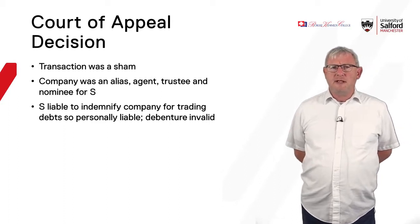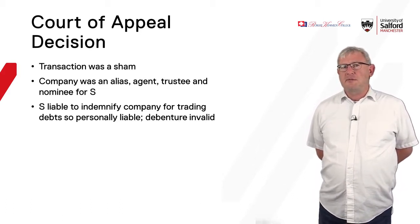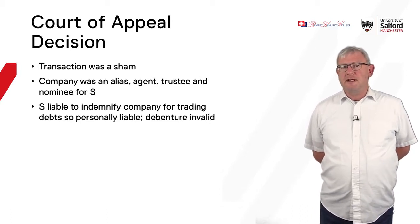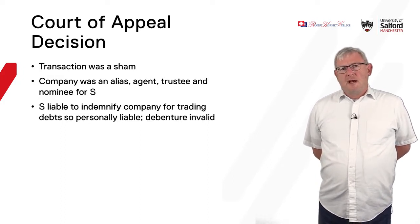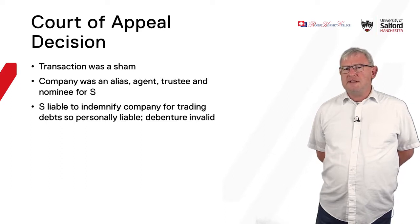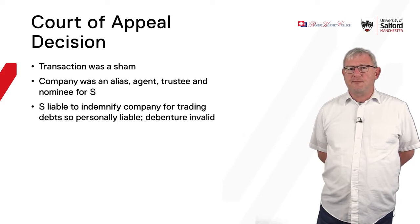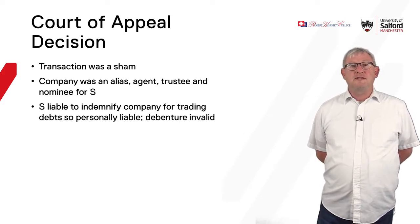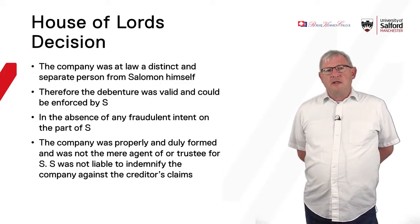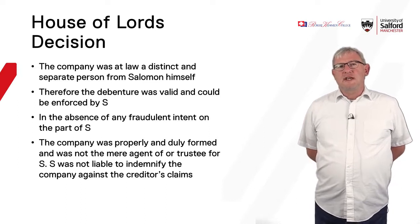The Court of Appeal said that even though this company had been properly registered and the law complied with in full, it was a sham — Mr Salomon should be treated as the same as the company, with no separate legal personality. This was in many ways the commonly held view at the time, because in the 1890s it was thought that the company structure should only be used for large trading operations, not for small businesses like that of Mr Salomon. So the Court of Appeal upheld the status quo, in line with previous authority. However, the House of Lords disagreed — and this is why it's such a significant case — because the House of Lords reached exactly the opposite decision.